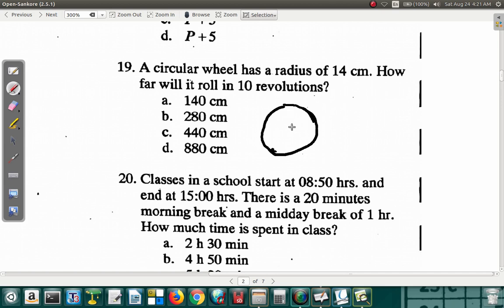Here we have this wheel as a circular wheel. It has a radius of 14. So this is the radius 14 centimeters. Now it talks about 10 revolutions. What do we do? Let's look at how far it will roll in one revolution, and then we multiply that by 10.